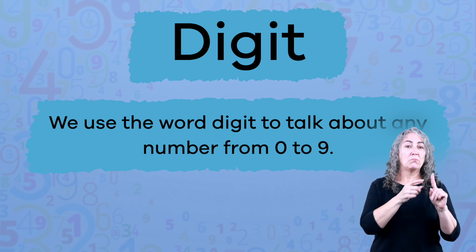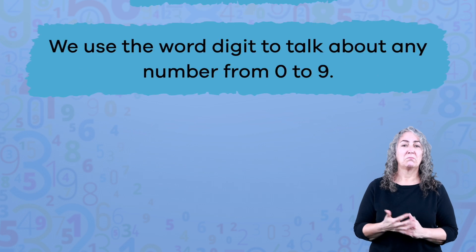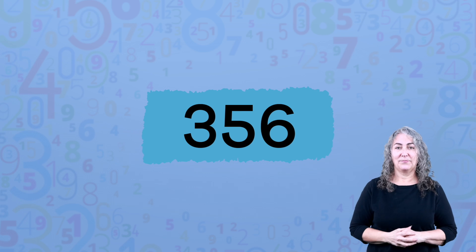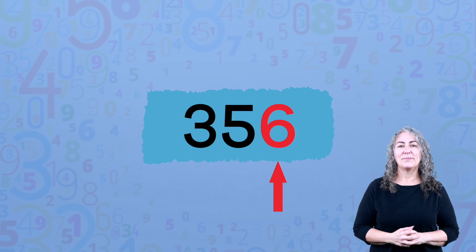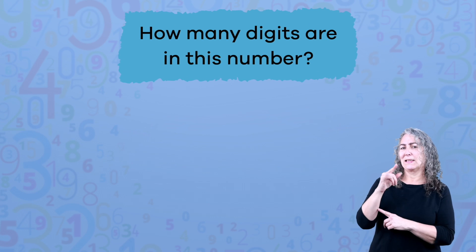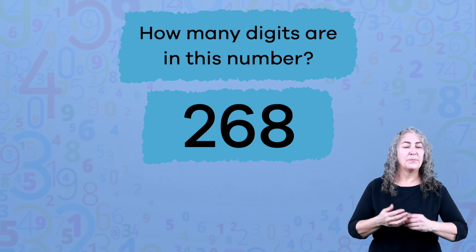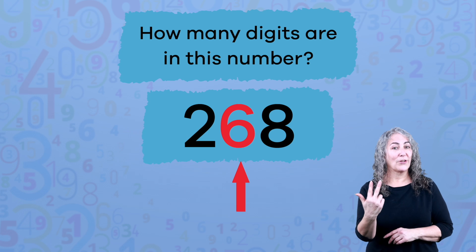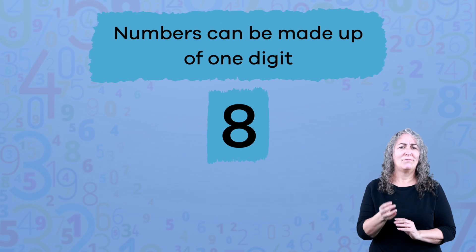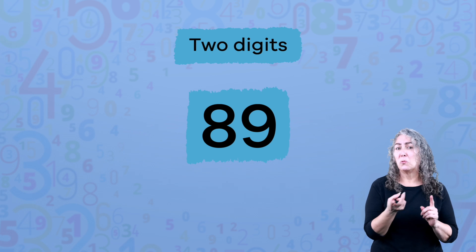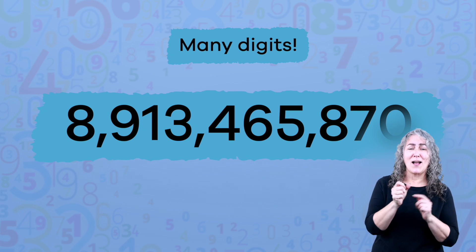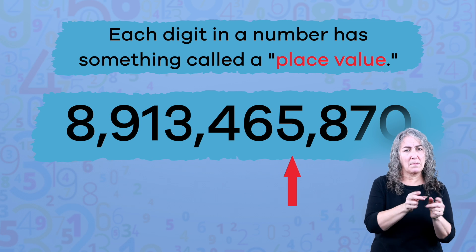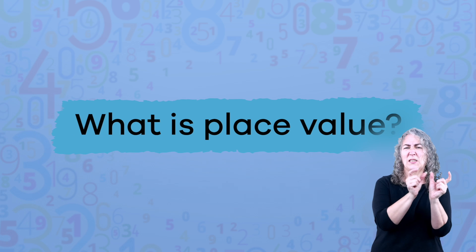In the number 356, there are three digits: one, two, three. How many digits are in this number? It's three again, isn't it — one, two, three. Numbers can be made up of one digit, two digits, or many digits. Each digit in a number has something called a place value. What is place value?